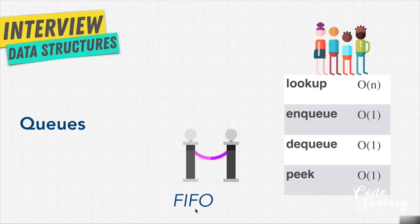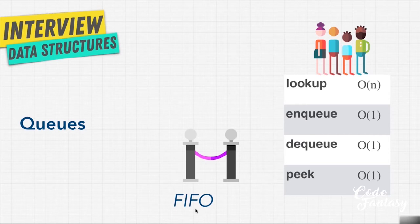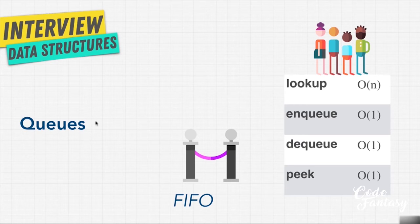Queues are used a lot in programming problems and interview questions. For example, if you had any sort of waitlist app to buy tickets for a concert, that uses queues. A restaurant app where you check in to see if you can get a table — that uses queues. Uber or Lyft when you want to grab a ride: the person that requested first gets priority. And the most common example is a printer — if three family members each print different items, the person that clicks print first gets their printout first.